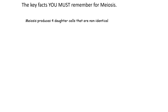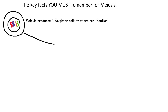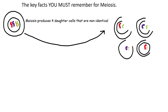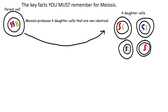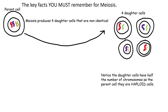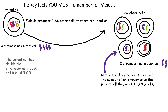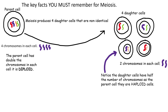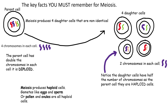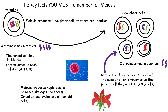The key facts you must remember for meiosis: meiosis produces four daughter cells that are non-identical. This parent cell splits — it actually has two divisions — into four daughter cells. These cells only have two chromosomes, half the original parent. We say these are haploid cells, as they have half the chromosomes of the parent cell. The parent cell is a diploid cell. Meiosis produces haploid cells — gametes — like eggs and sperm, or pollen and ovules. All gametes are haploid cells.